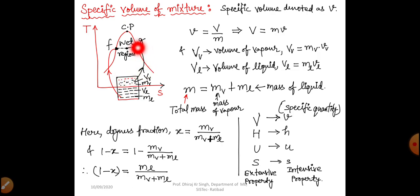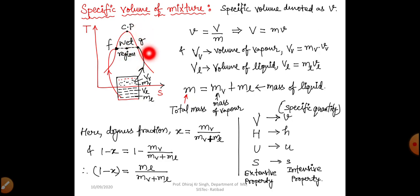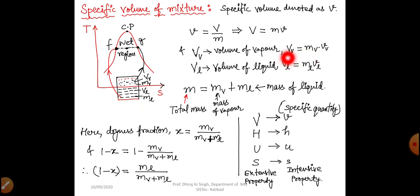Point G is on the saturated vapor line — G denotes vapor. Point F is on the saturated liquid line — F denotes liquid. VV is our volume of vapor, and we can write: volume of vapor = mv × vv (mass of vapor × specific volume of vapor). Total volume of liquid: VL = mL × vL.